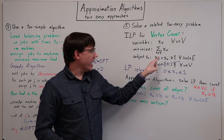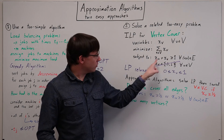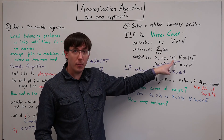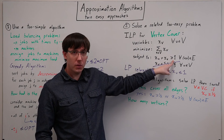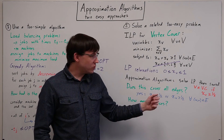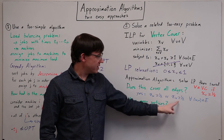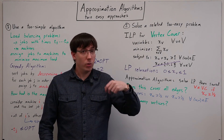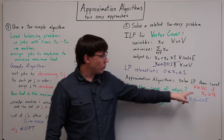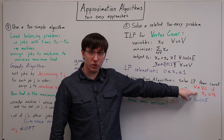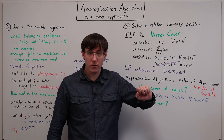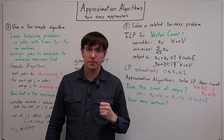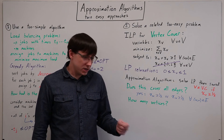And since we have, for every edge, a constraint that the two variables have to add up to at least one, we know that at least one of these two variables must have a value that's at least a half. And so when we do the rounding, at least one of those vertices will end up in the vertex cover, and so we will have succeeded in covering every edge.